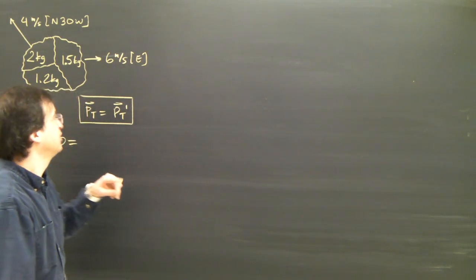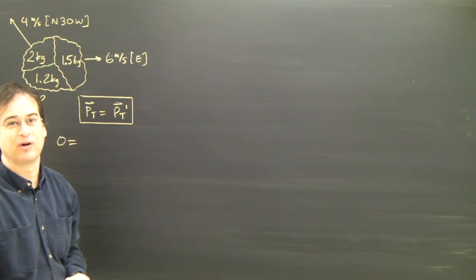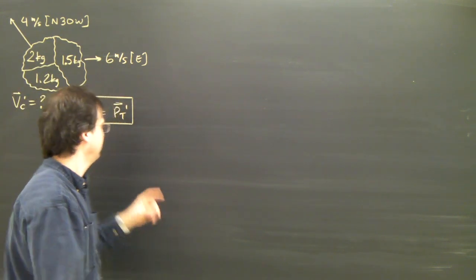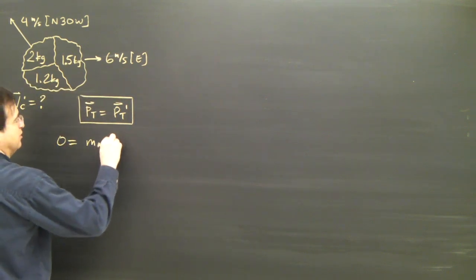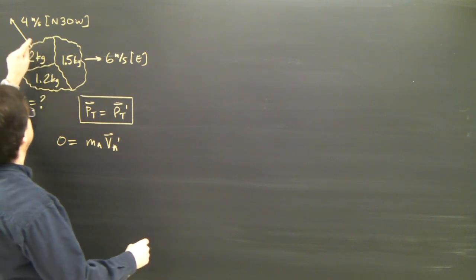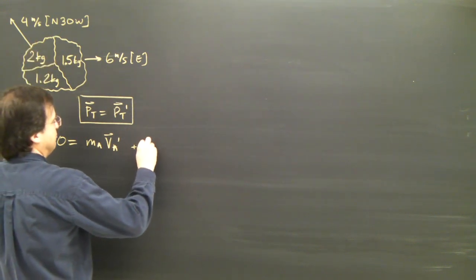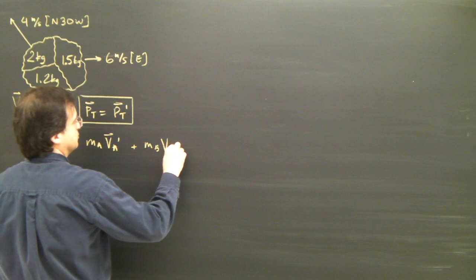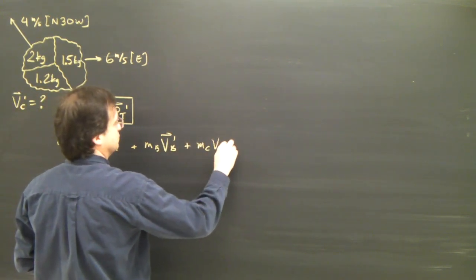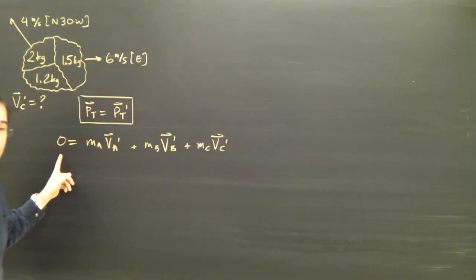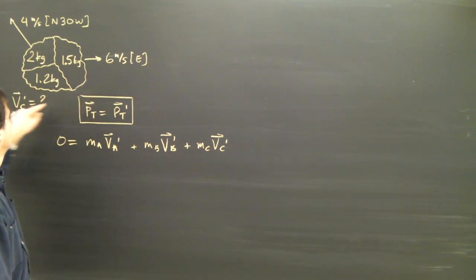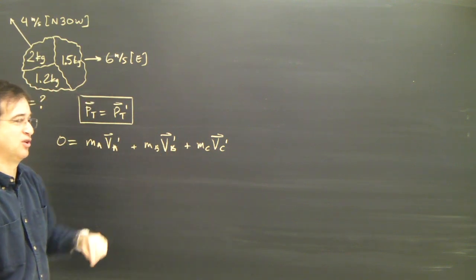The momentum after the explosion: I've got three pieces and I've got to account for the momentum of all of them. The momentum is mass times velocity, so I'm going to end up with m_a times v_a afterwards — the momentum of a — plus the momentum of b, plus the momentum of c. So there's no momentum before. I've got the momenta of a, b, and c afterwards, and I've got all of those except the momentum of c, so I'm going to be able to solve for it.